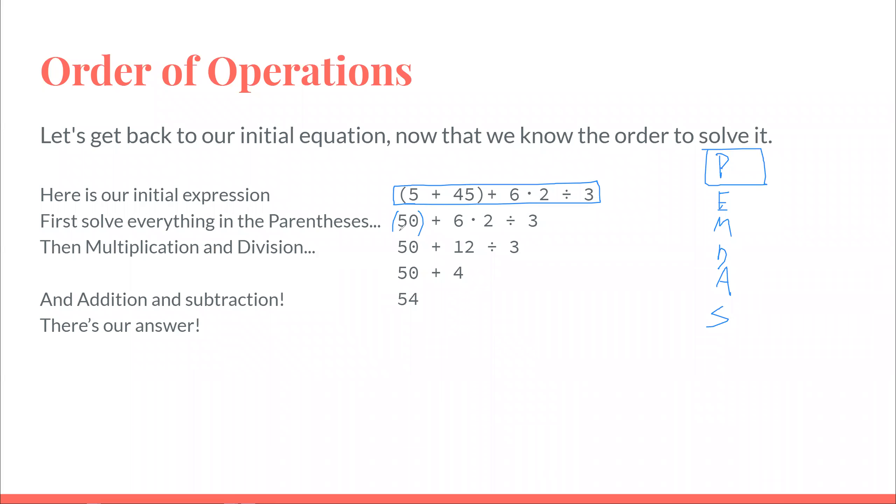So, after you get the 50, you have to solve the other things because there's nothing to solve in the parentheses now. So, now you go to exponents and there's no exponents in this equation. So, you would move on to M and D. Remember, left to right. So, you see 6 times 2 first. So, you have to do 6 times 2 first. So, then it would be 50 plus 12 because we did 6 times 2 divided by 3.